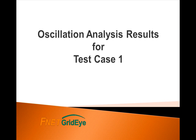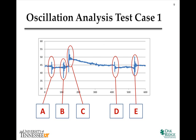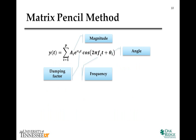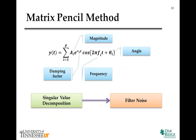In the second section, we will discuss the results of the oscillation analysis test case. For test case one, there are five ring-down events in the 10-minute data. The matrix pencil method is used to estimate the oscillation frequency and damping ratio. This method uses singular value decomposition to provide an effective way to filter noise.